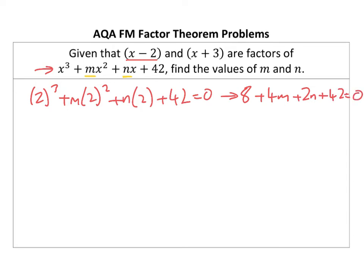I can simplify that in a bit. Now, doing this one here, I'm going to put negative 3 in there. So negative 3 cubed plus M times negative 3 squared plus N times negative 3 plus 42 equals 0, and we end up with negative 27.